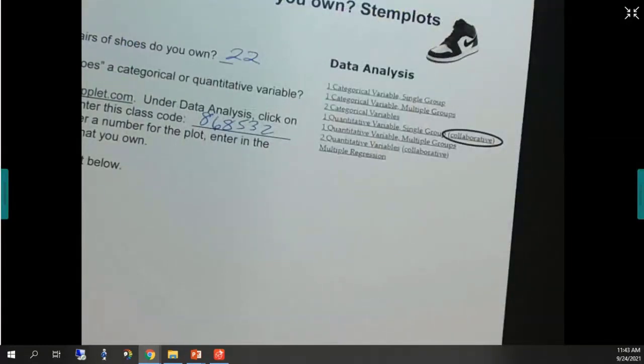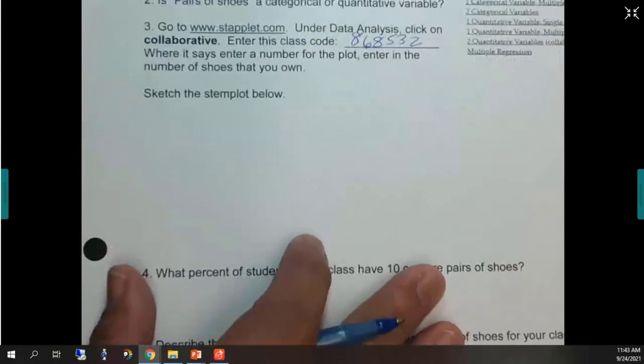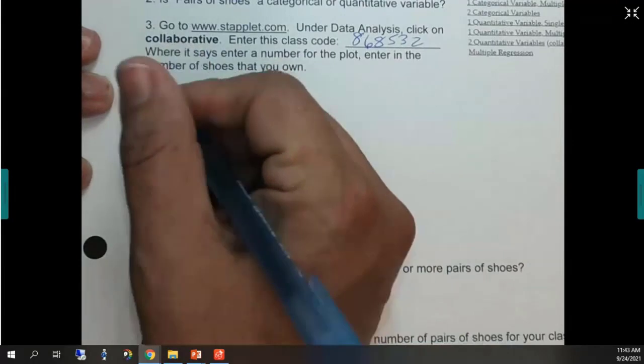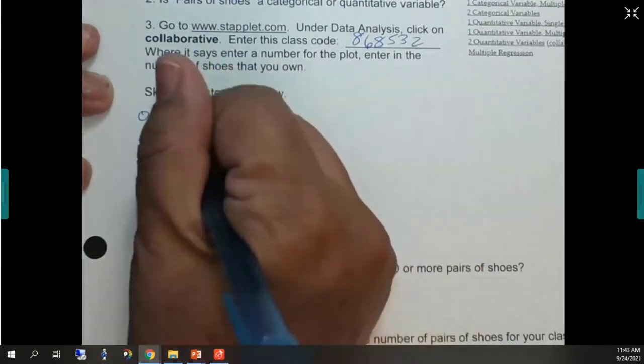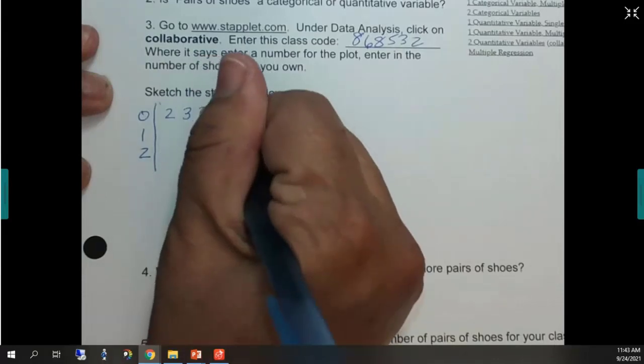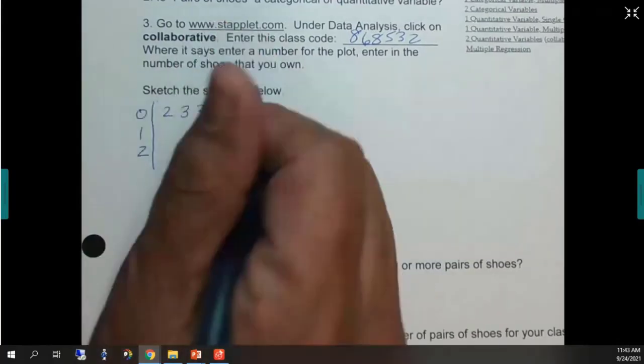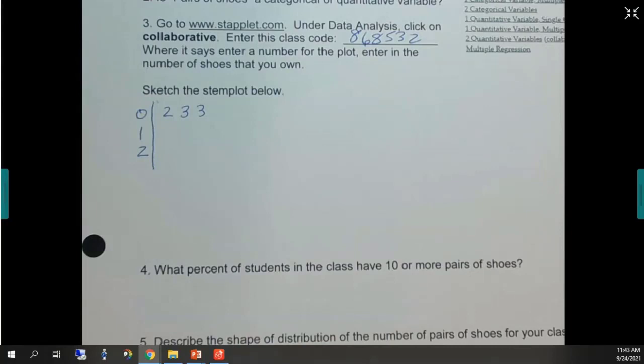So I'm gonna go ahead and copy down this stem plot. How many fours are there? Let's see. All right, I'm gonna pause the data collection just so it doesn't keep changing on us. All right. Let's go back. It just paused data collection.